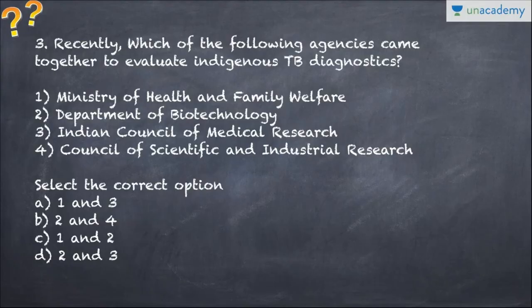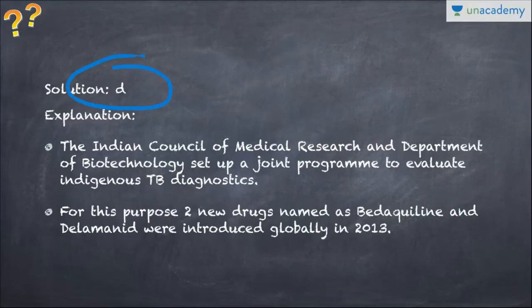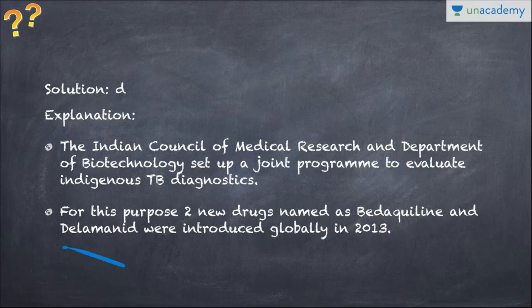Question three: Which agencies came together to evaluate indigenous TB diagnostics? TB means tuberculosis. The answer is option D — two and three — that is the Department of Biotechnology and ICMR, which have set up a joint program to evaluate indigenous TB diagnostics. For this purpose, two new drugs named bedaquiline and delamanid were introduced globally in 2013.